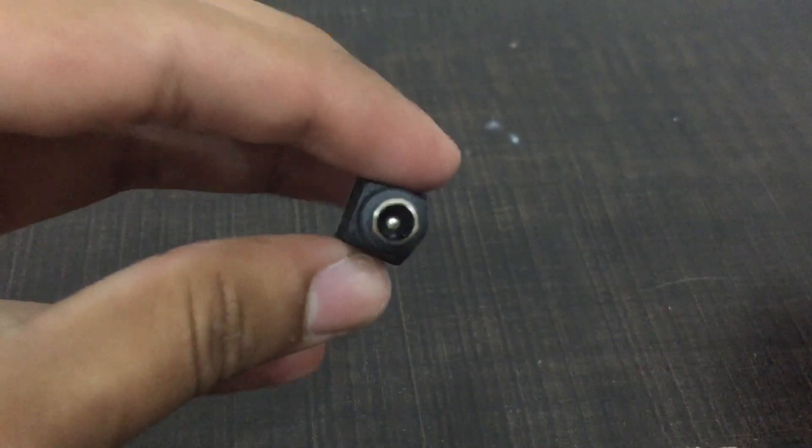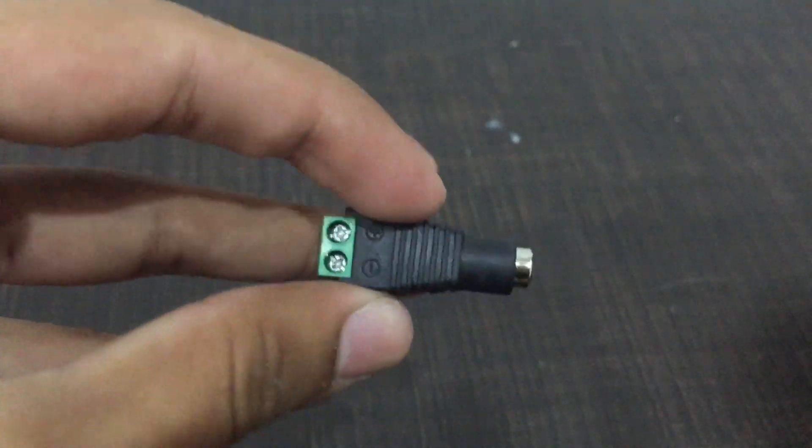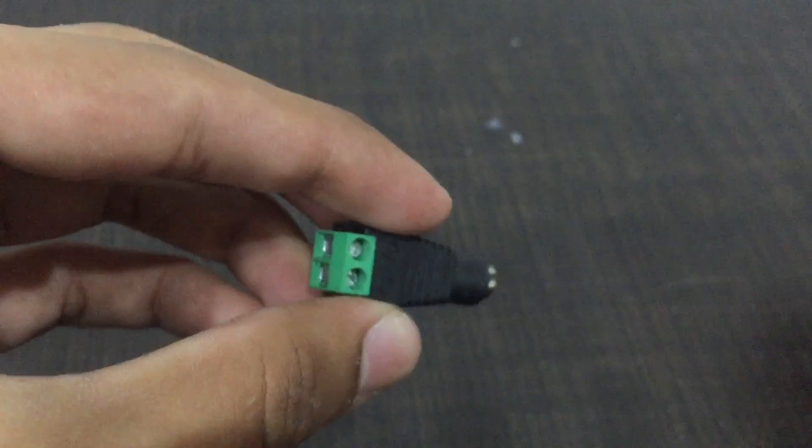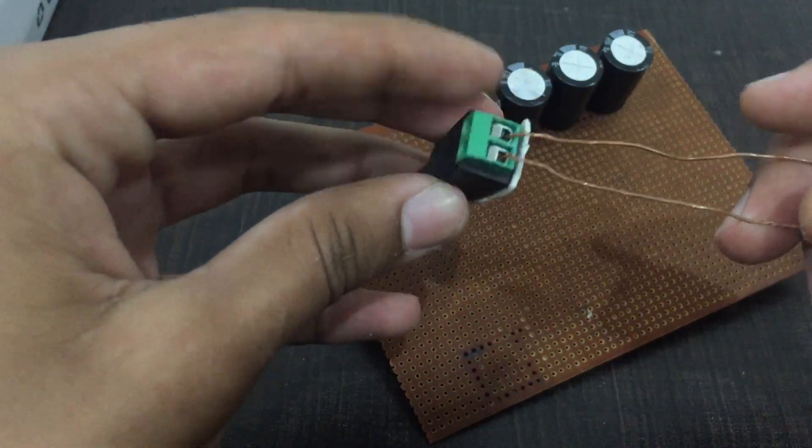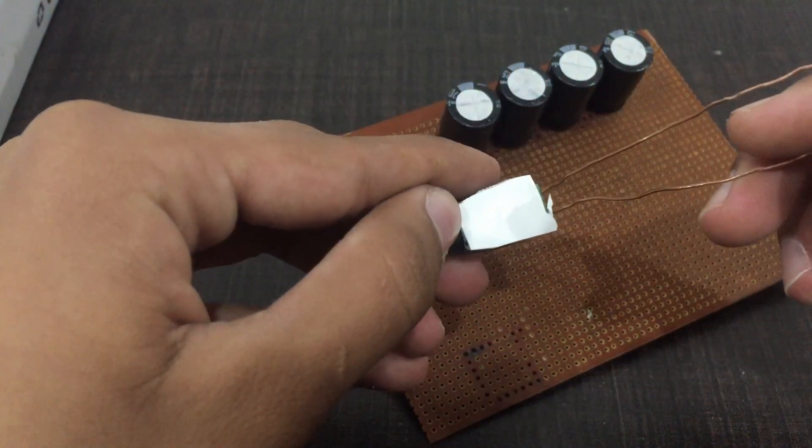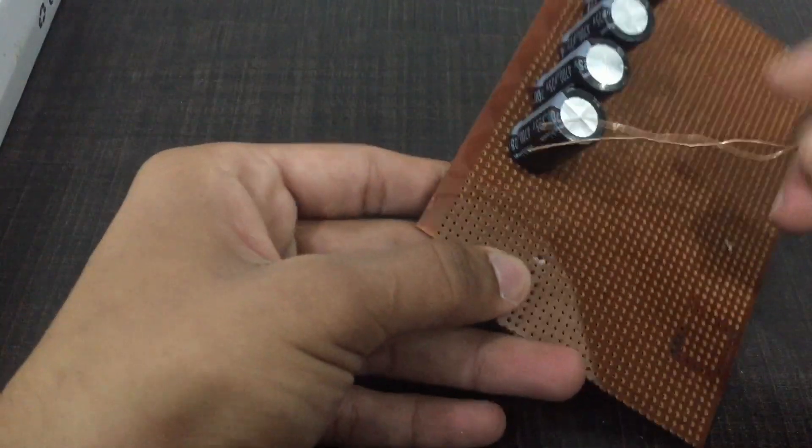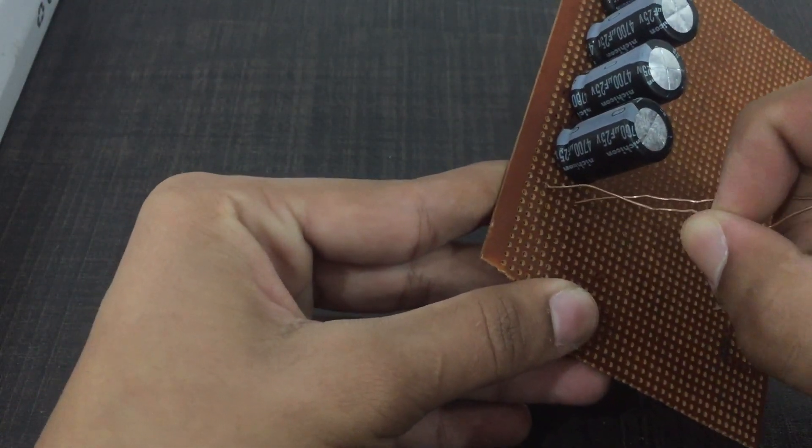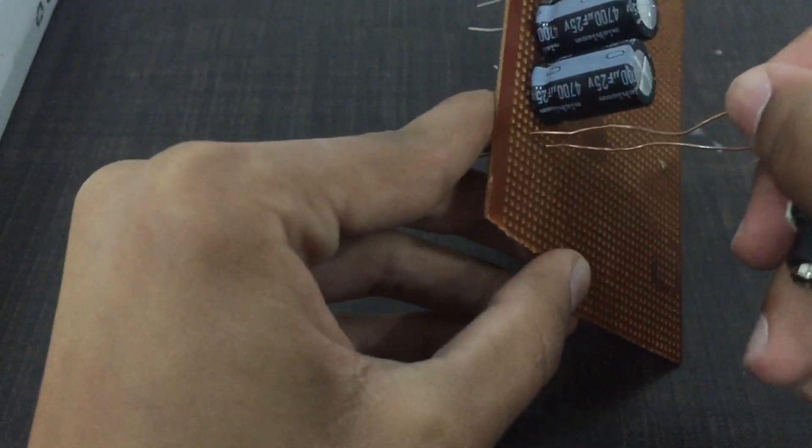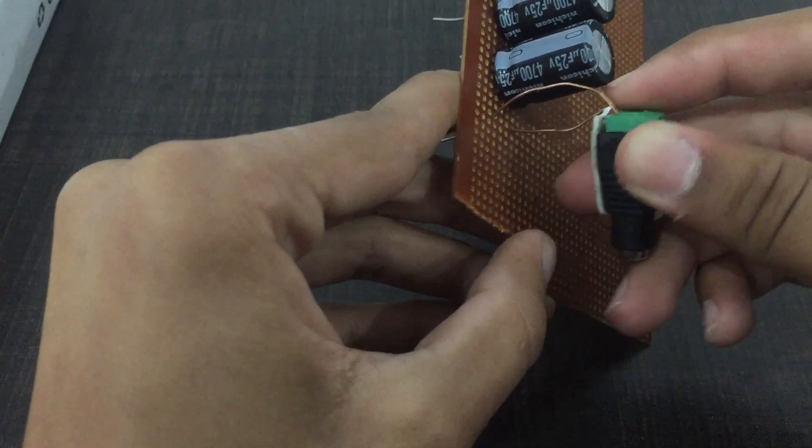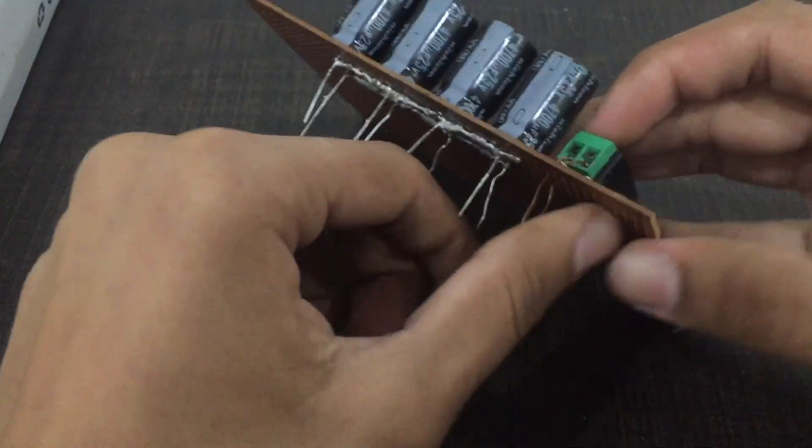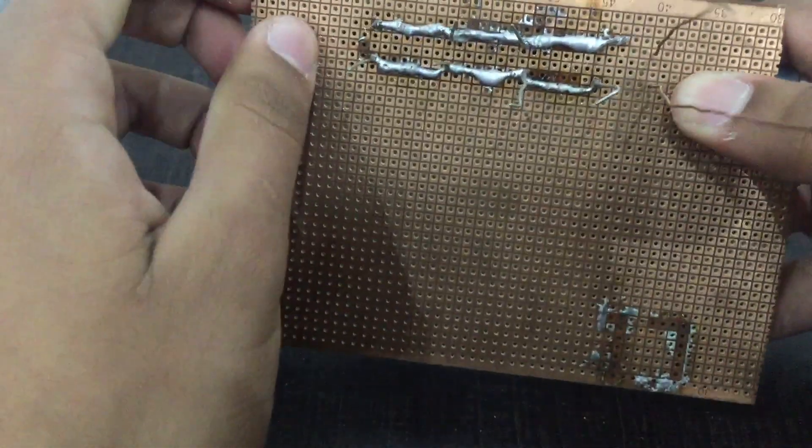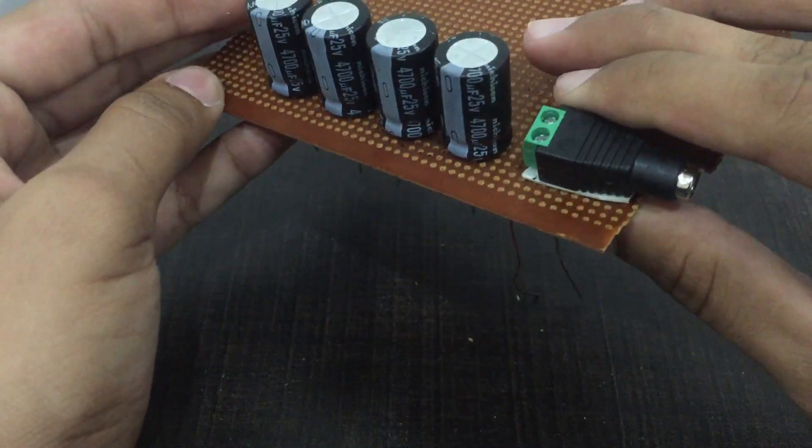Next up, I would be using a barrel connector to supply current to the capacitor. So now I have to solder this on. I have connected copper wires to the connector, which should slide underneath the perfboard. After soldering, it looks something like this.